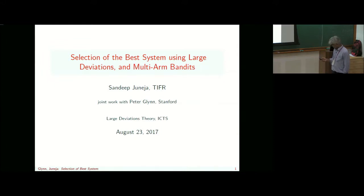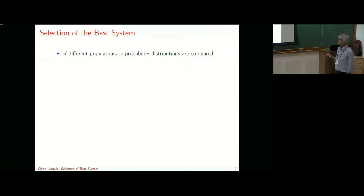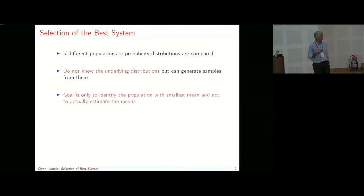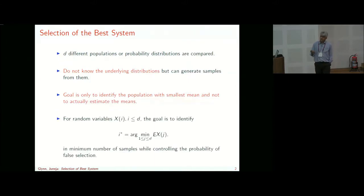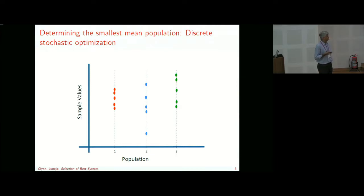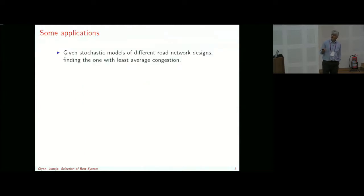We have probability distributions to be compared. We do not know these underlying distributions but we can generate independent samples from them. The goal is to identify a population with the smallest mean — not to estimate the means themselves. That's what we want to exploit using large deviations theory. For random variables X_i, i ≤ D, our aim is to find the population i* with minimum mean. Here's a picture: three populations I can sample from independently, and I want to find the one with the smallest mean, keeping the probability of incorrect selection small.